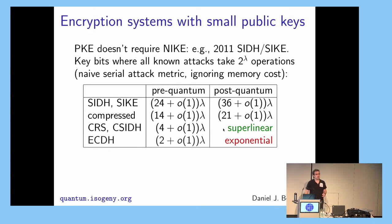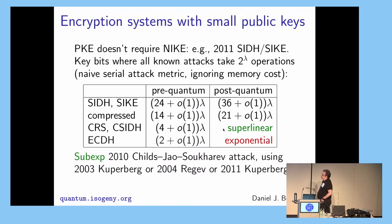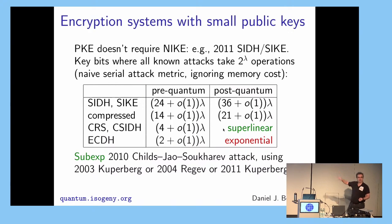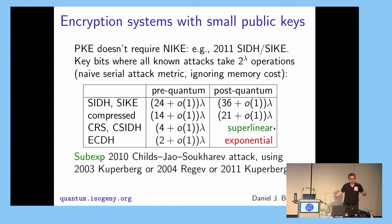What about CSIDH? That's somewhere in the middle, because there's a sub-exponential time attack against CRS and CSIDH. This goes back to 2010 — Childs, Jao, and Soukharev used Kuperberg's sub-exponential time hidden shift algorithm, or Regev's follow-up algorithm, or another follow-up by Kuperberg — same Kuperberg, but better than the first paper and actually also better than the second paper. Kuperberg 2.0 is better than Kuperberg 1.0 and better than Regev. That sub-exponential time attack means you need super-linear key sizes to resist it. You can ask natural questions about what exactly the super-linear factor is and when it crosses beyond 2-lambda.